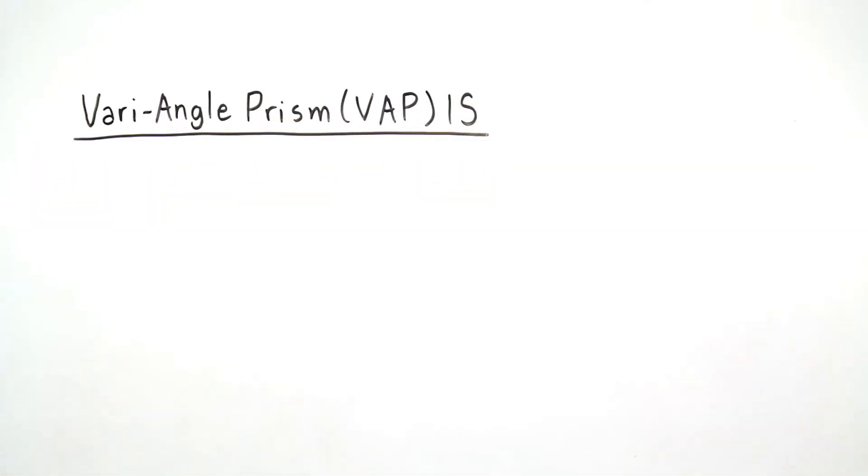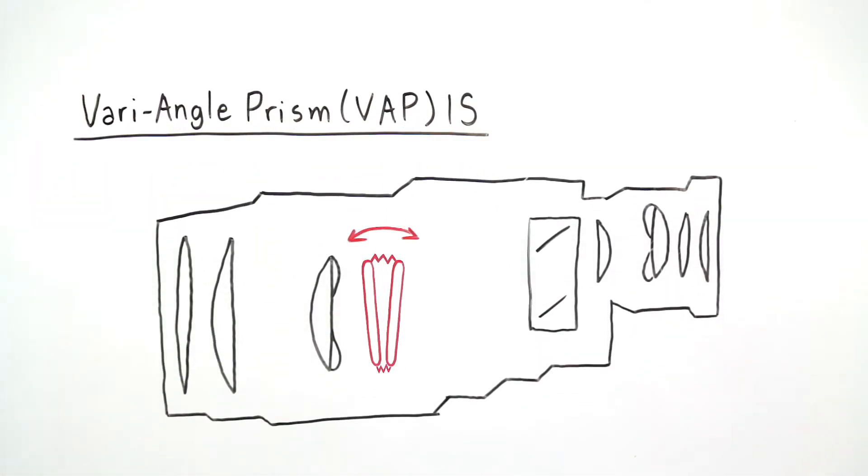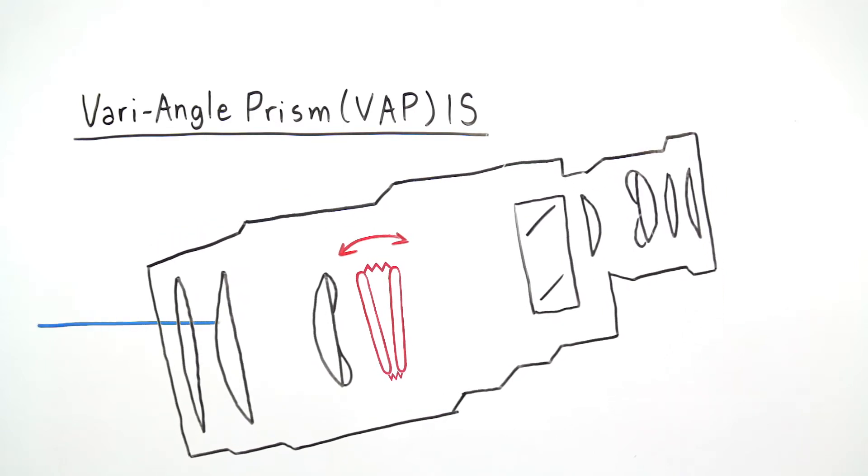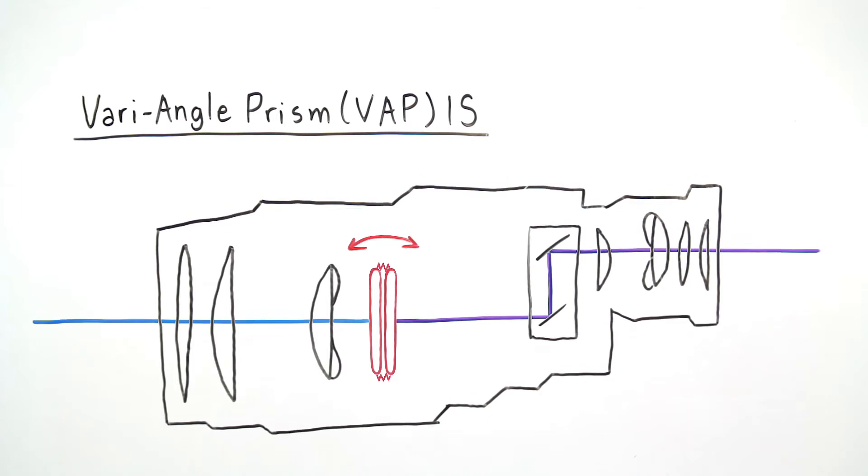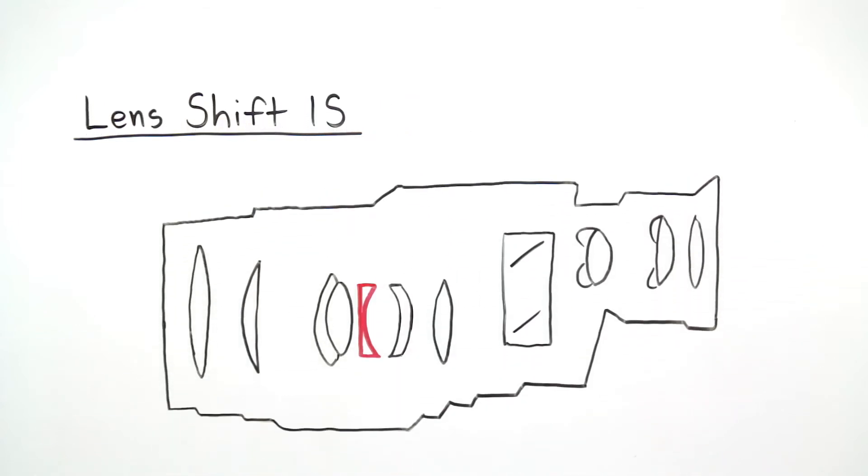With Vari-Angle Prism IS, the lens bellows change shape, adapting to the shake and stabilizing the image for an impressive and steady view. We also offer LensShift IS,